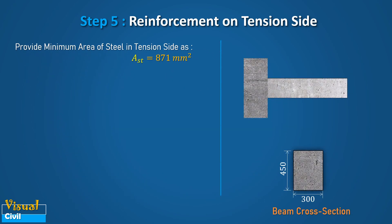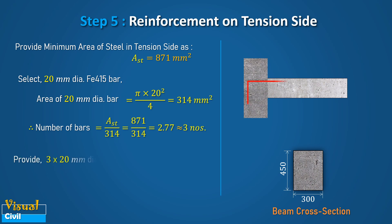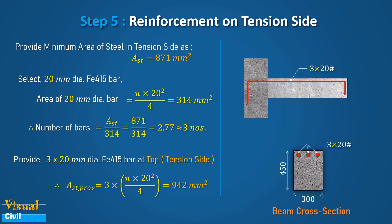Let us fix the number of bars to be provided as tension reinforcement. Selecting a bar diameter of 20 mm, the cross-sectional area of each bar is 314 mm square. Computing the number of bars by dividing the required area of steel by the cross-sectional area of each bar, we provide 3 number of 20 mm diameter bars at the top, which is the tension side. Thus, the total area of steel provided is 942 mm square.